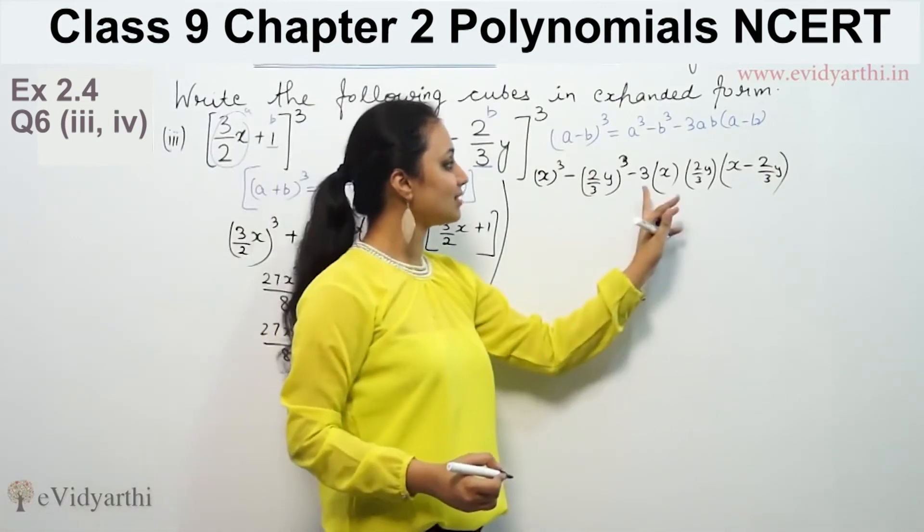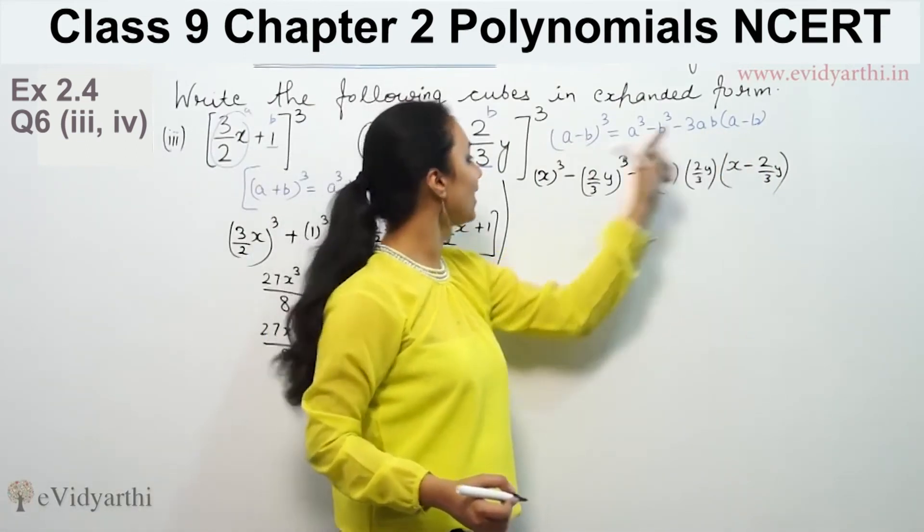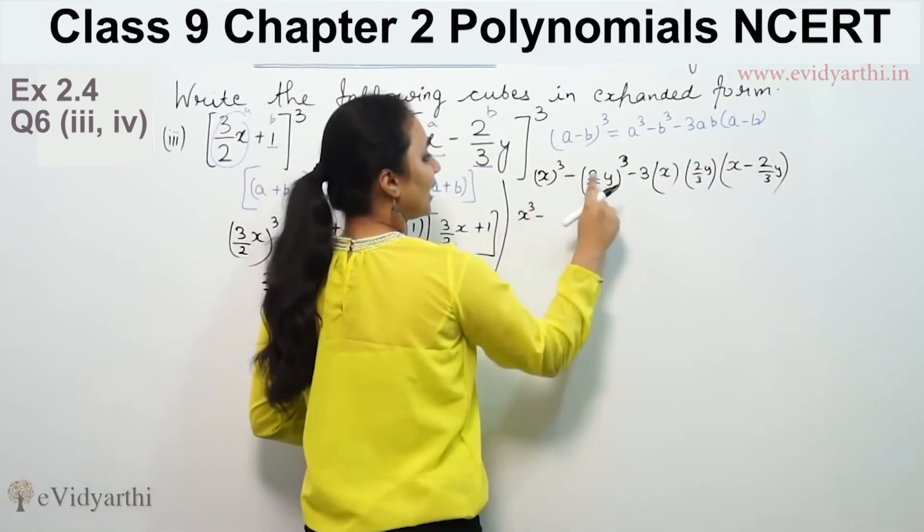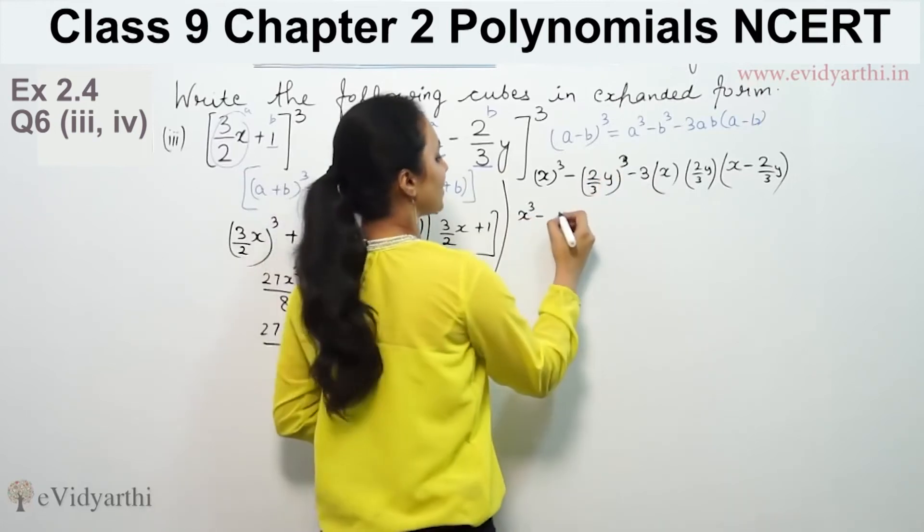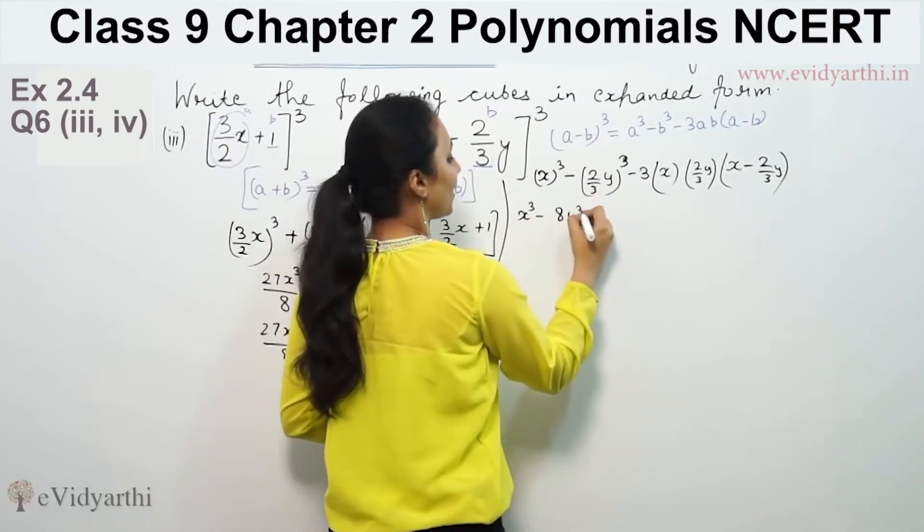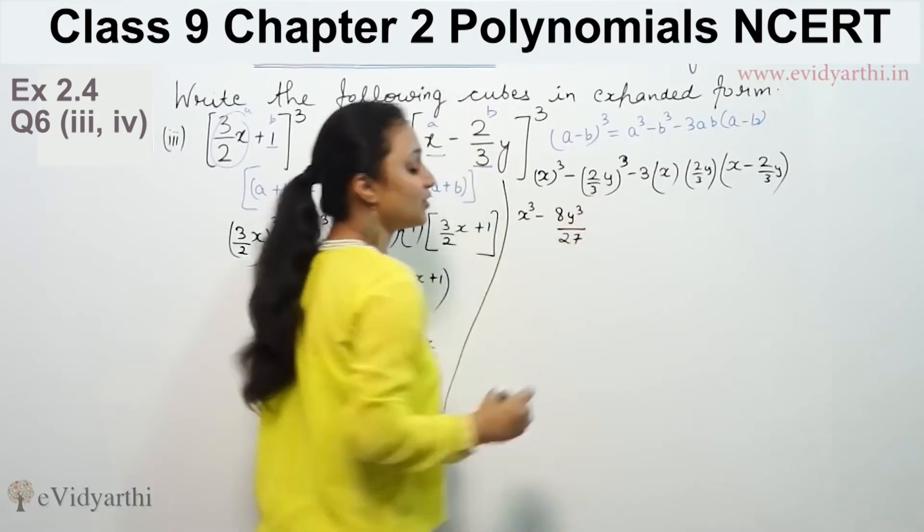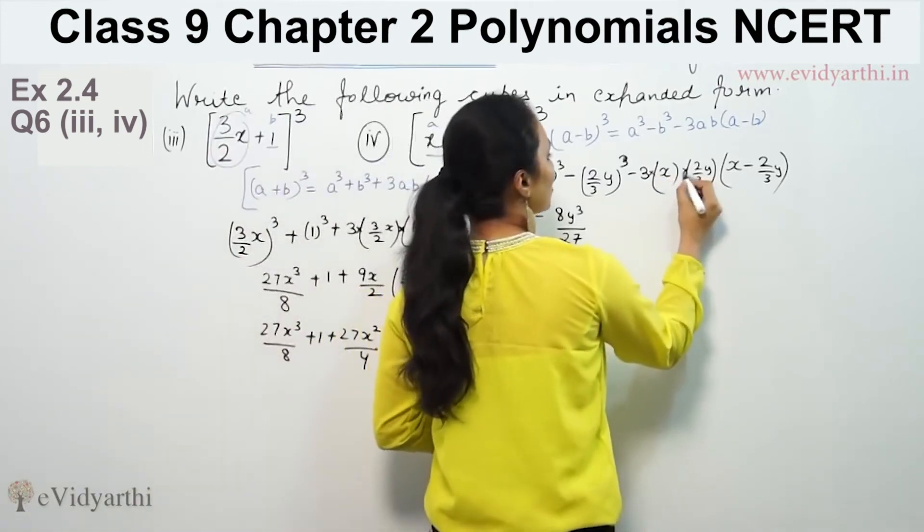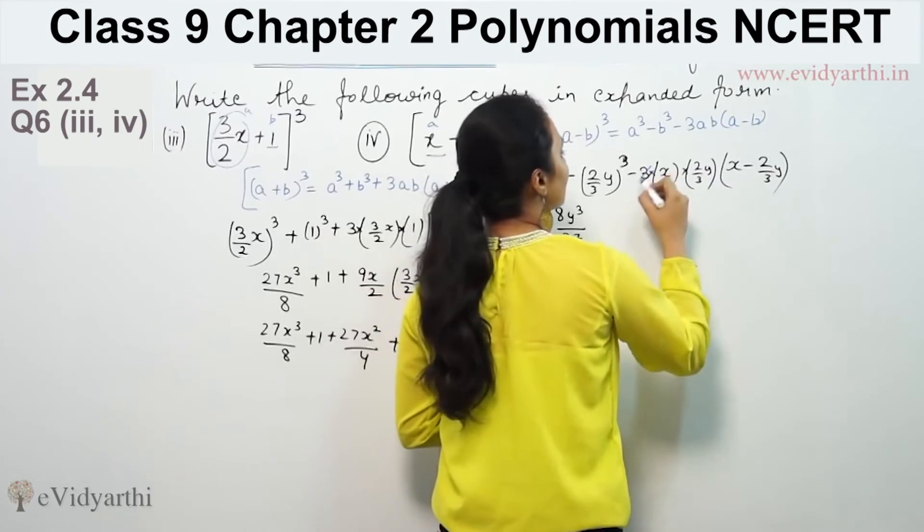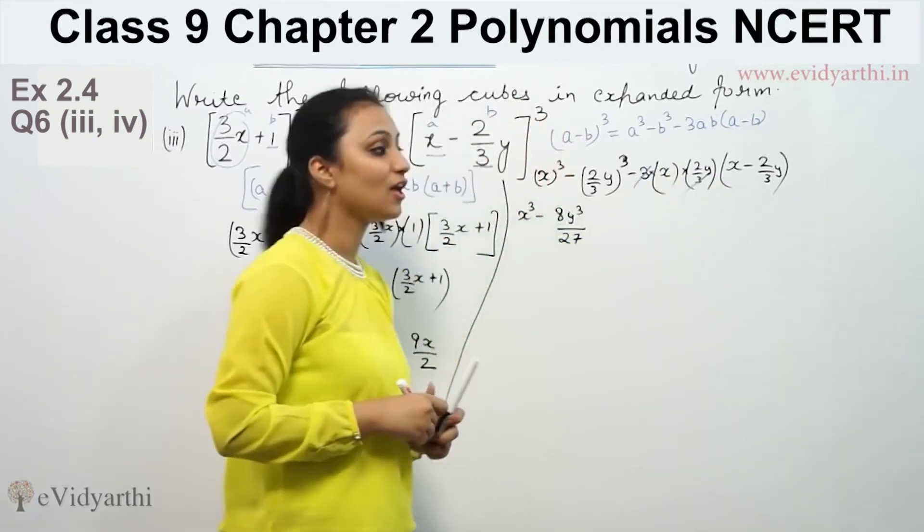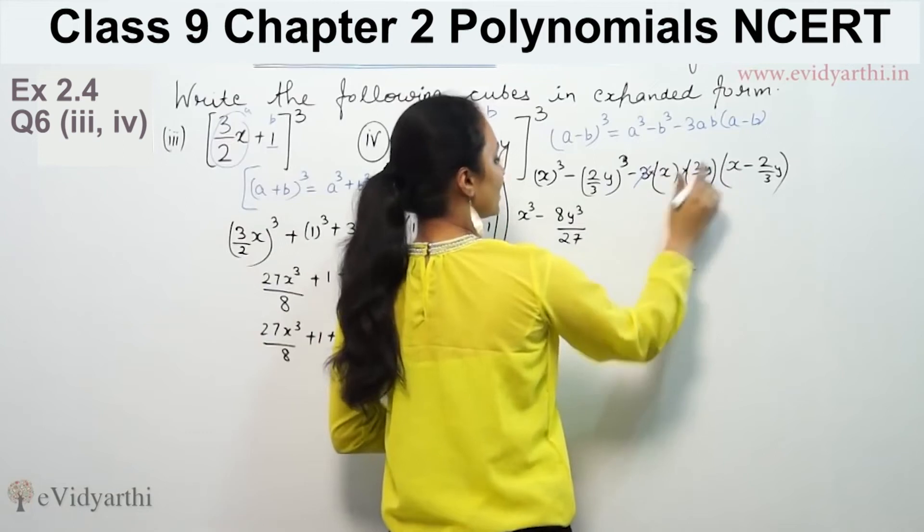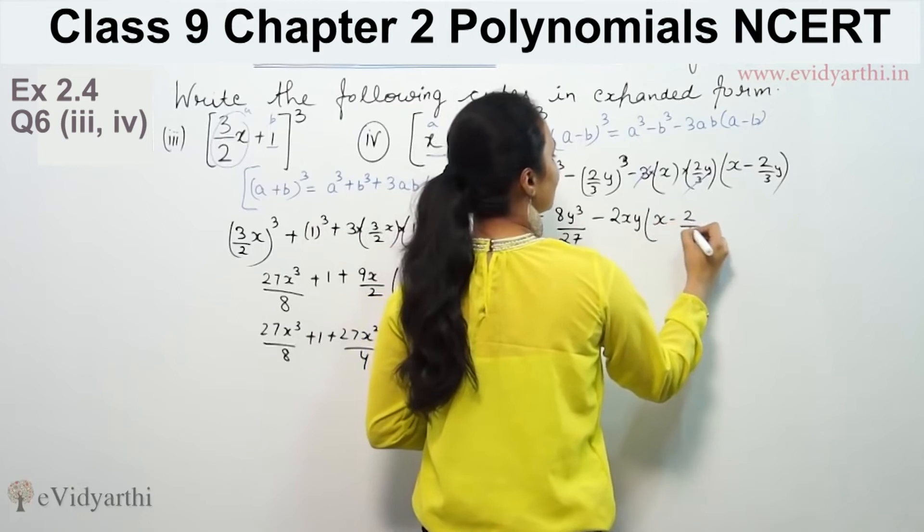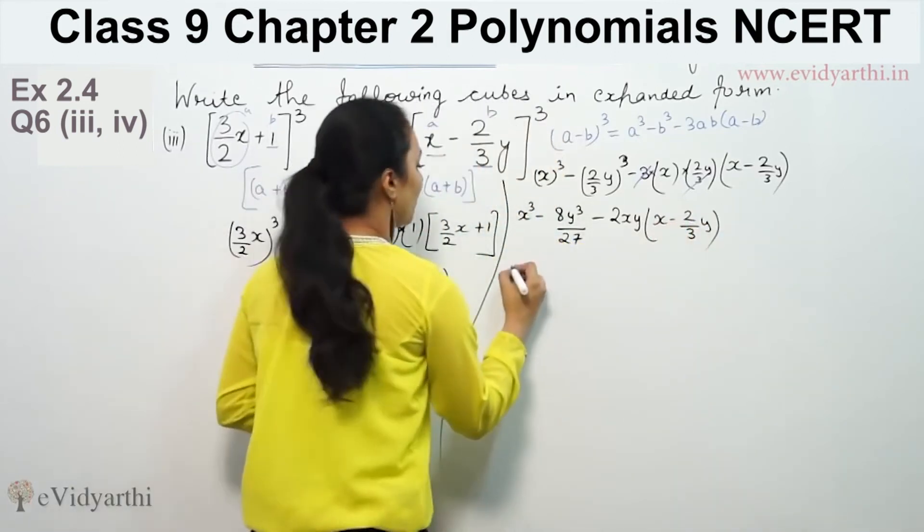This is the multiplication: 3 × x × (2/3y) is 2xy. The negative sign is outside, so it's -2xy in bracket (x - 2/3y).